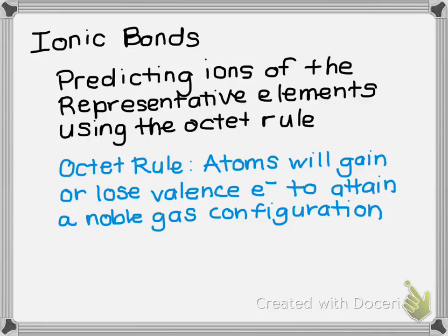We can predict the charges of the representative elements with good success using something called the octet rule. The octet rule says that atoms will gain or lose valence electrons to attain a noble gas configuration. A noble gas configuration is a very stable arrangement because its valence electrons are full, with an S2P6 configuration.